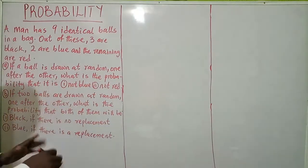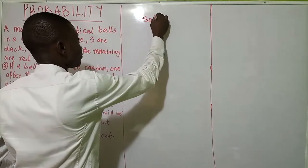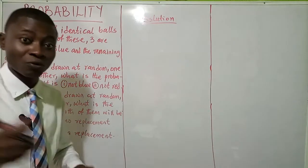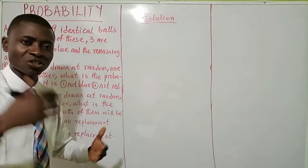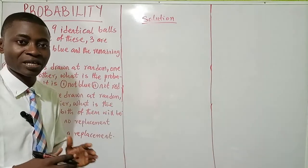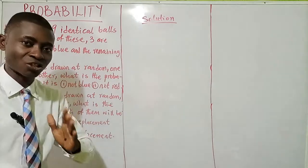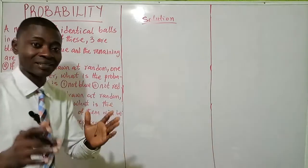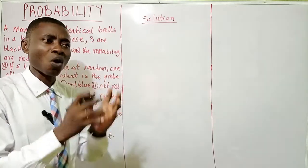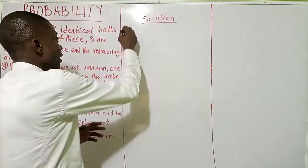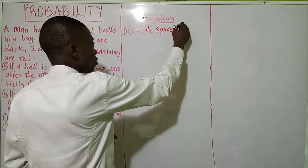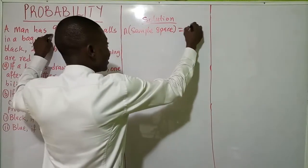Let's write our solution. If you have not watched our previous video — the introduction to probability — I encourage you to please watch it so you understand this topic better. Now, as usual, the first thing we need to do is to identify our sample space, or the total outcome. The sample space from this question is nine.